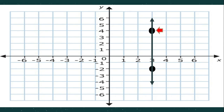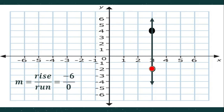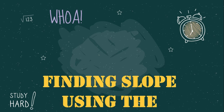Now we have a vertical line. Starting from this point and going downward: negative one, two, three, four, five, six — so our rise is negative six. The graph doesn't go either left or right, so our run is zero. Can we simplify negative six over zero? No, we cannot — so the answer is undefined, meaning this graph has an undefined slope.